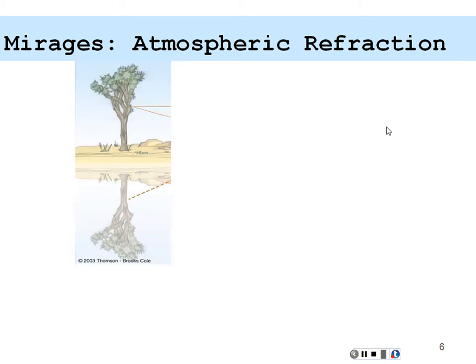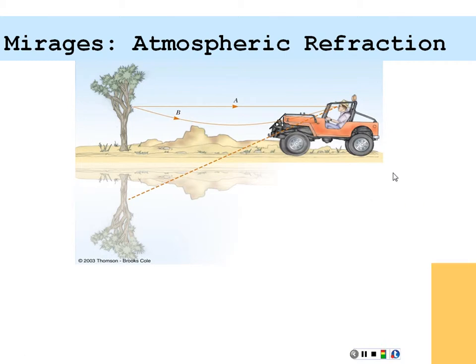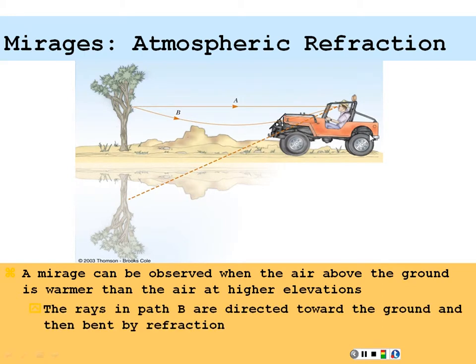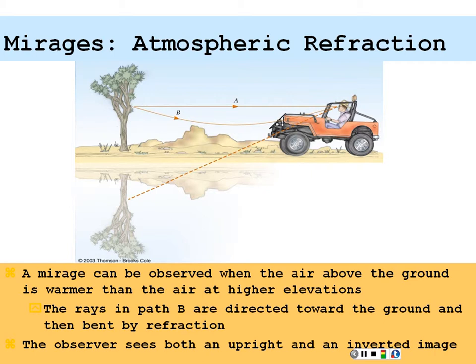A similar type of refractive event is the mirage. Because the air is hotter near the surface of the ground, there will be a different index of refraction for the heated air. If you're in a Jeep looking at a tree, you would see a direct image — ray A hitting your eyes. But the ray directed toward the ground might actually bend due to the heated air near the ground, and that refraction might direct that ray to your eyes as well. So you're going to see a second image of the same tree, and the second image will actually be inverted.